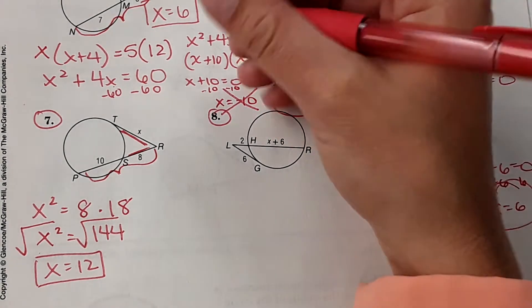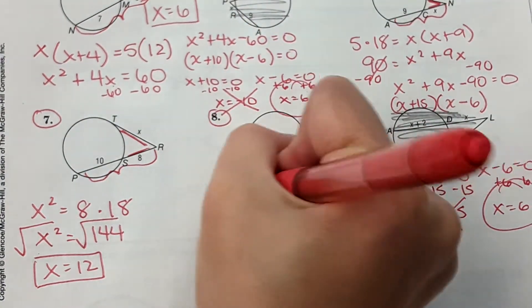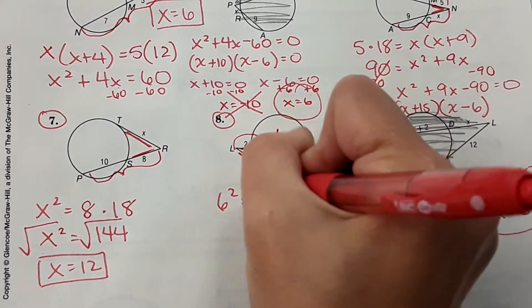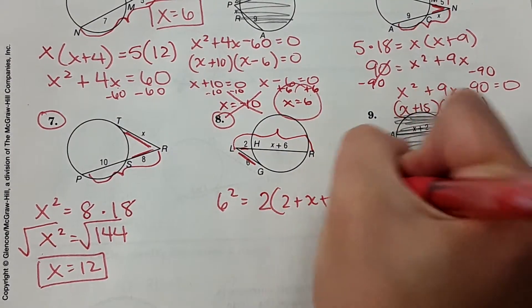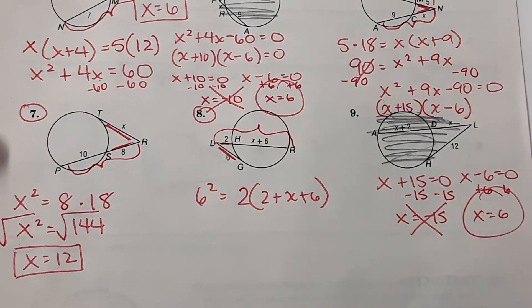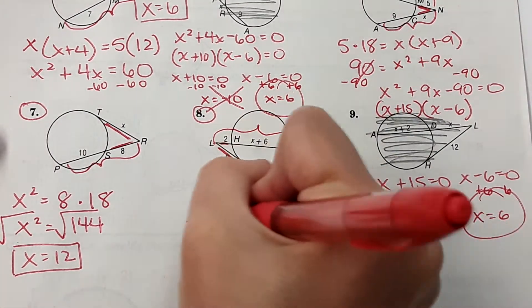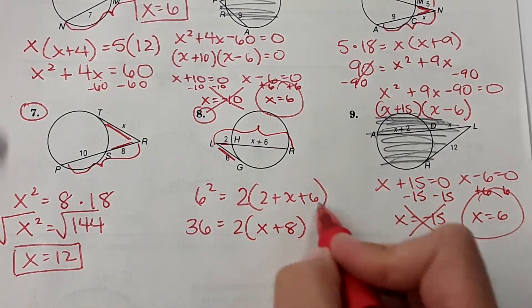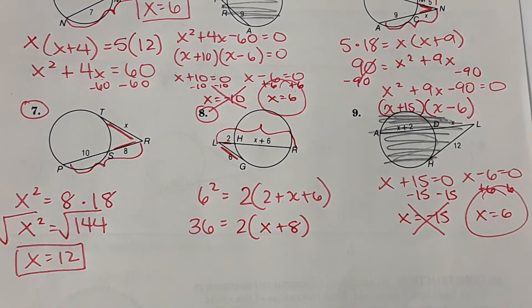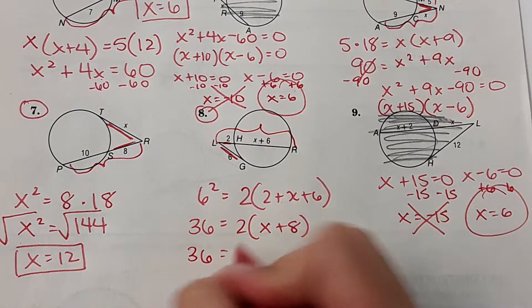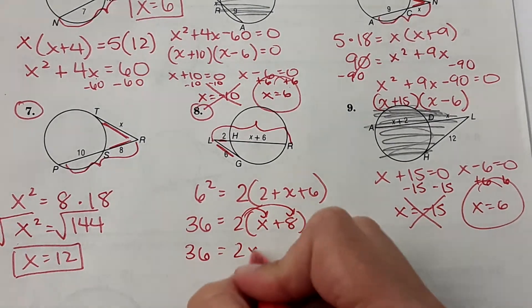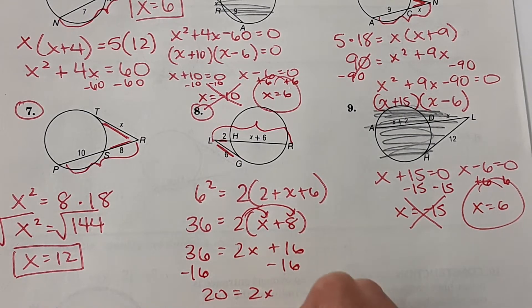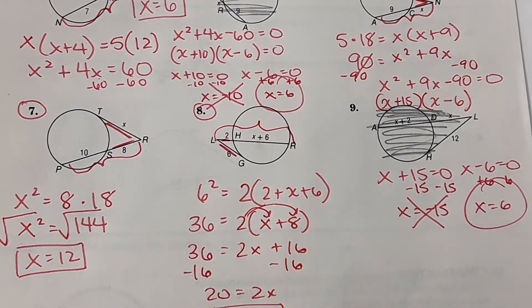And number 8 is the same idea. We're going to do 6 squared equals 2 times this whole length, 2 plus x plus 6. So 6 squared is 36. I'm going to combine like terms before I distribute the 2. So this will be x plus 8. 2 plus 6 is 8. And then, distributing the 2, it'll be 2 times x and 2 times 8. 2x plus 16. Yeah, x equals 10.